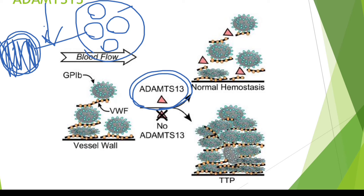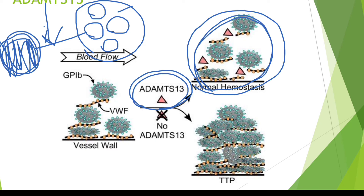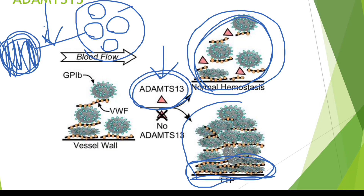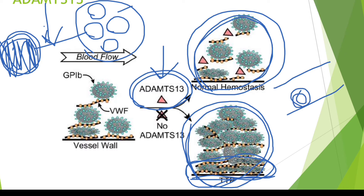When von Willebrand factors are in smaller multimeric forms, the process is normal, with adequate blood clot formation to stop bleeding. However, if ADAMTS13 is absent or destroyed within the body, large multimeric forms remain in the blood. These large multimeric forms recruit a large number of platelets to form larger clots within blood vessels. While clots in larger blood vessels may not cause problems, when they traverse to smaller blood vessels, they can easily occlude the lumen and cause serious problems.